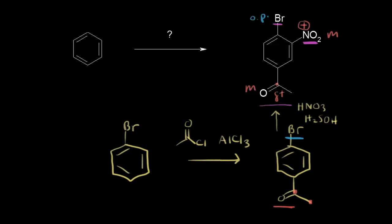Now all we have to do is go from benzene to bromobenzene — that's simply a bromination reaction. So we have bromine and then our catalyst, and our synthesis is complete.